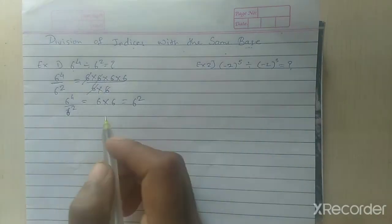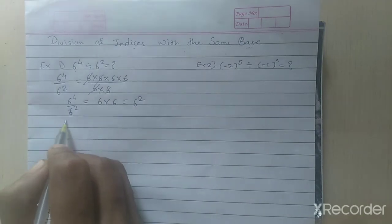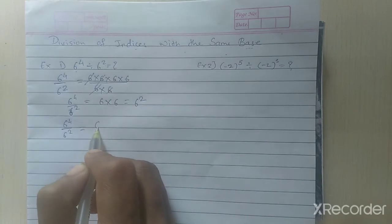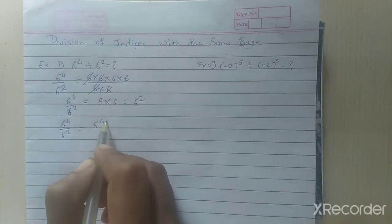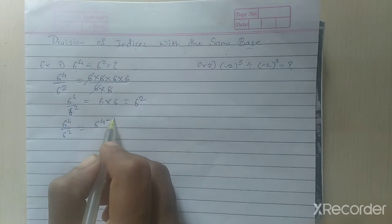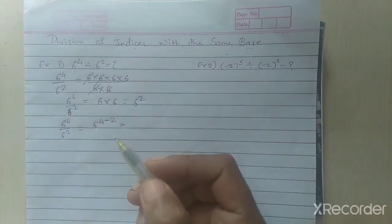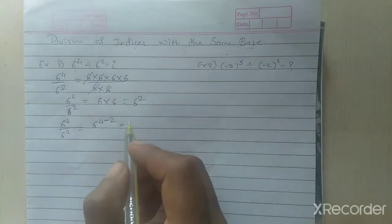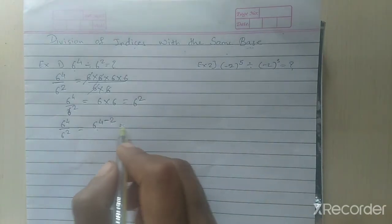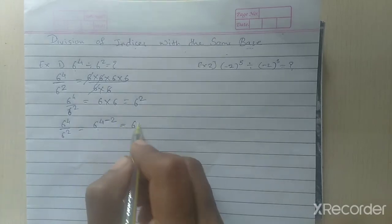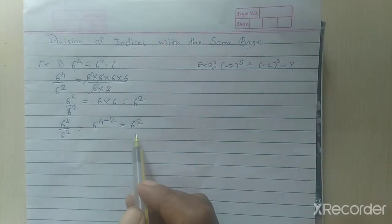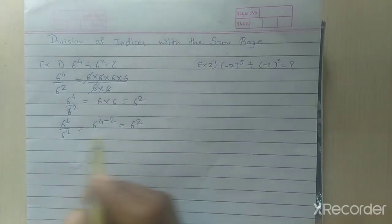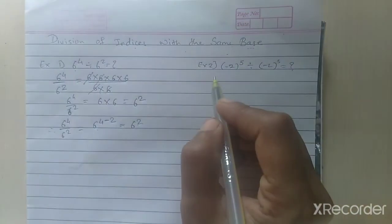Here is one more method. If we have 6 raised to 4 divided by 6 raised to 2, we simply do subtraction of the exponents: 6 raised to 4 minus 2. So 4 minus 2 is 2, giving us 6 raised to 2. This answer is the same as before, and this is our formula result.